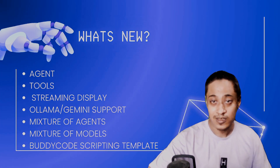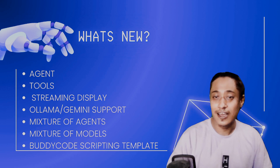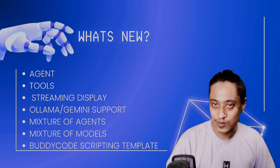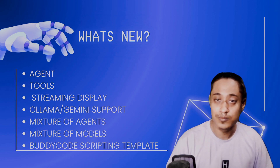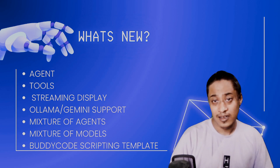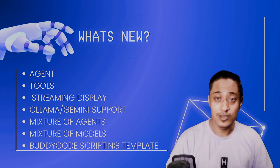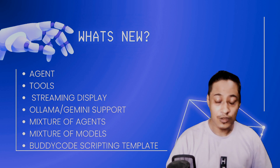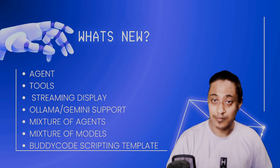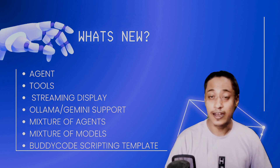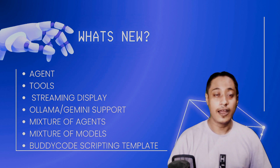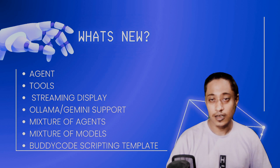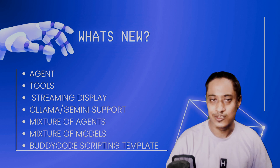We have agentic behavior in BuddyCode now. We can use BuddyCode to write code, execute it automatically, look for errors, and then rewrite it. I'll go through an app demo to show you how it happens, using both open source models as well as some proprietary models.